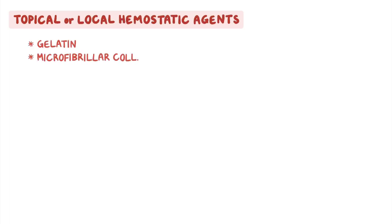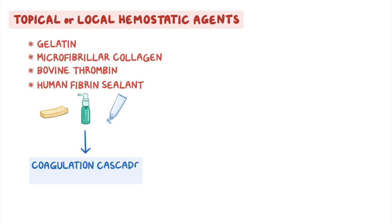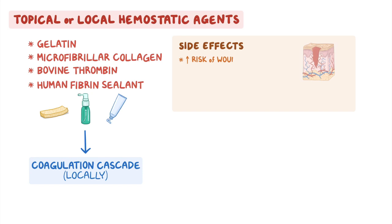Topical or local hemostatic agents — such as gelatin, microfibrillar collagen, bovine thrombin, and human fibrin sealant — are available as a sponge, spray, or solution that can be applied directly to bleeding tissues from injury or surgery. They work by activating the coagulation cascade locally.